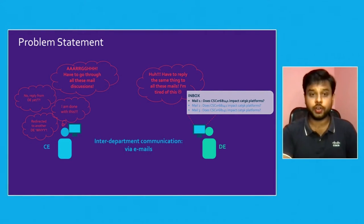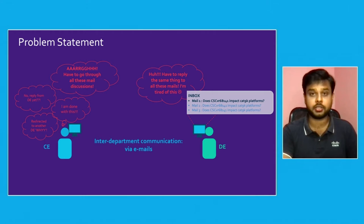On the other side, developers are receiving the same emails and same questions repeatedly from different consulting engineers. For the same bug or issue, the first, second, and third person may all ask the same questions in separate emails. Developers are understandably frustrated — why should they respond to the same question multiple times? This is the core problem: inter-department communication inefficiency.